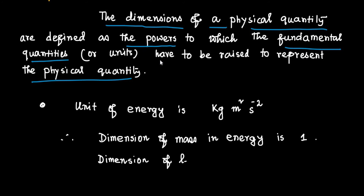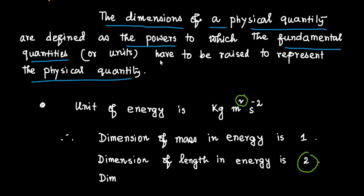Similarly, the dimension of length in energy is 2, because the power of meter, or the power of length, is 2. The dimension of time in energy is minus 2, because the power of second, or the power of time in the unit of energy, is minus 2.